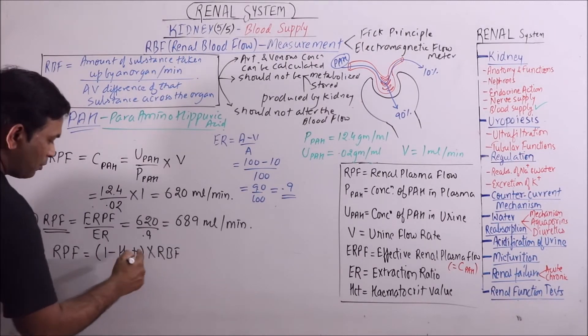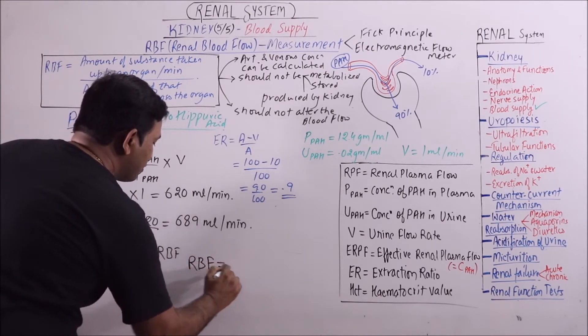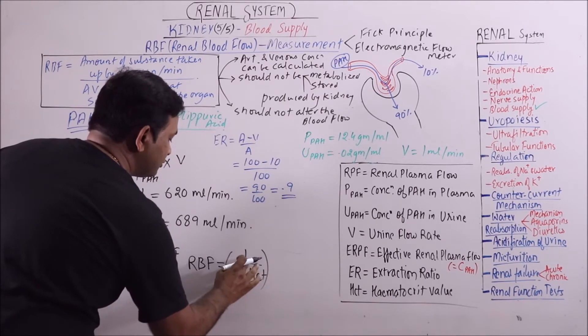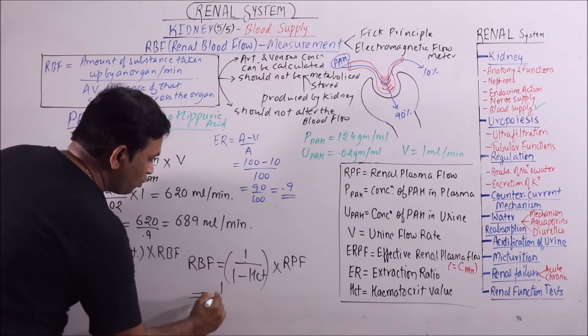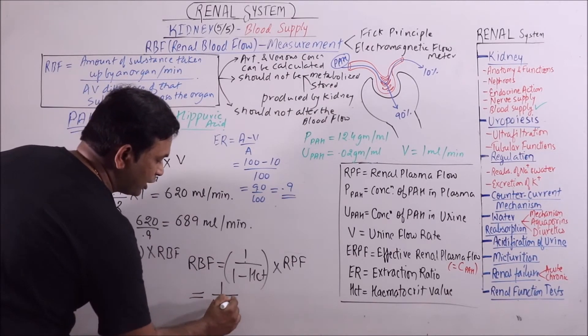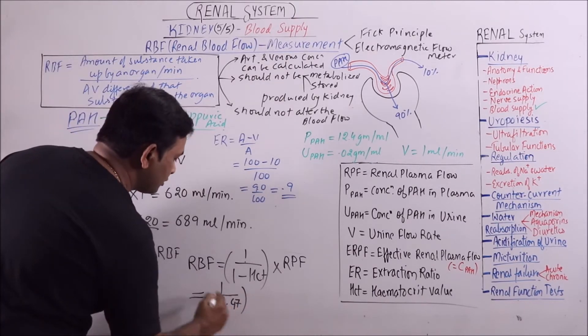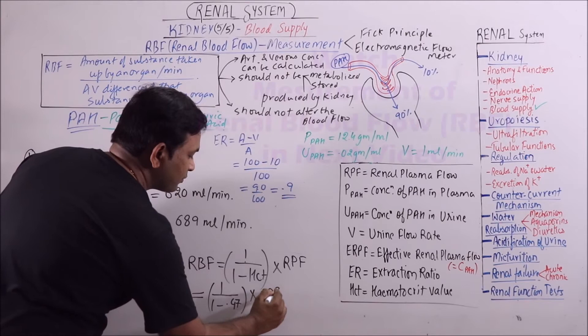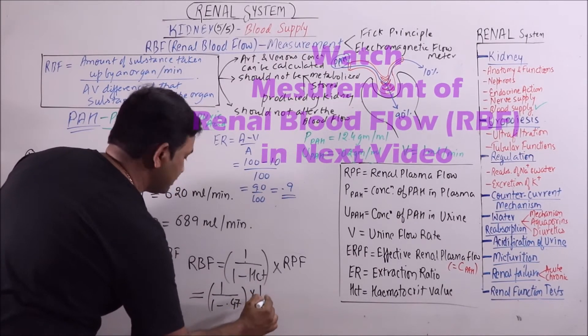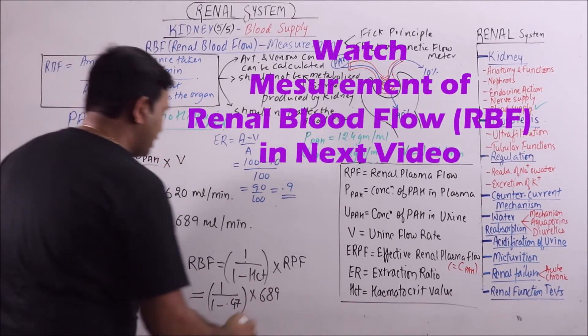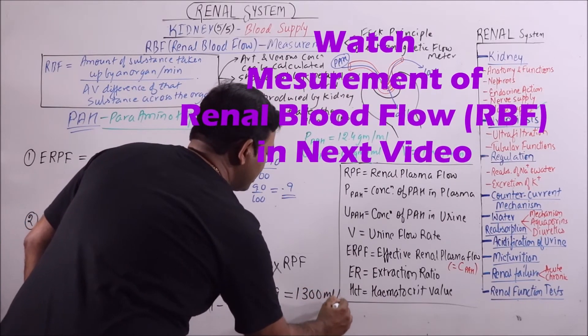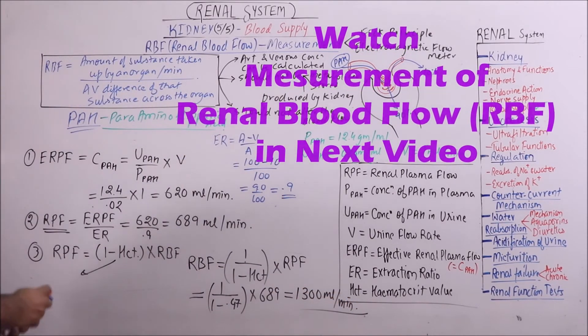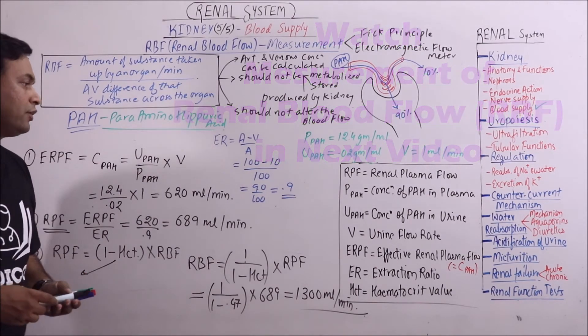So RBF will come out to be 1 upon (1 minus hematocrit) times RPF. That is 1 upon (1 minus 0.47) times 689, which comes out to be 1300 ml per minute. So this is the calculation of renal blood flow.